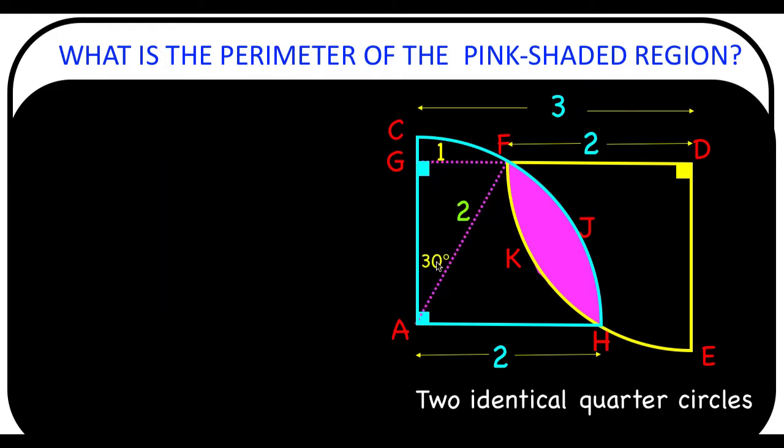So by knowing that this is 30 degrees and we have a right angle here, it follows that the measure of angle FAH must be 60 degrees. 30 plus 60 is this 90 degree angle. So in this quarter circle, the measure of the central angle is 60 degrees. We can now compute for the length of arc FH.